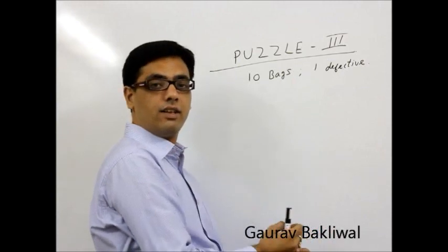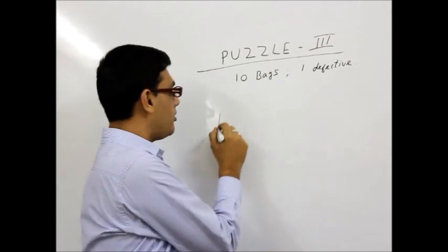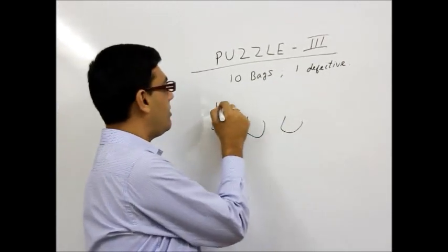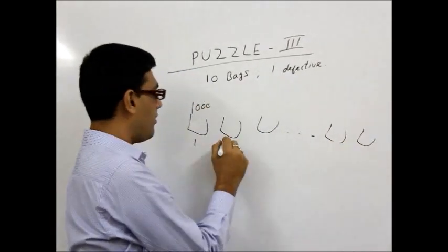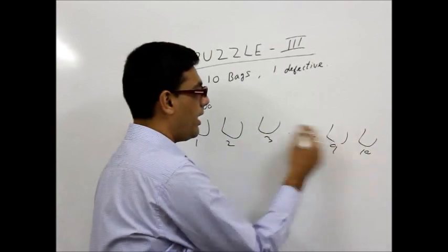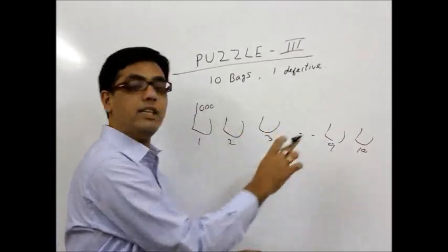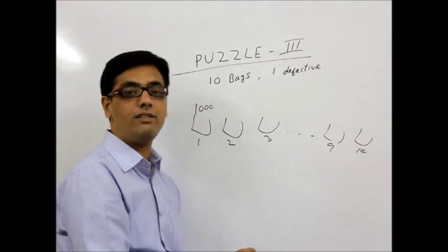There are 10 bags. Each bag has 1000 balls in them. So this is bag 1, bag 2, bag 3, bag 9, bag 10. There are 10 bags. Each bag has 1000 balls in them.